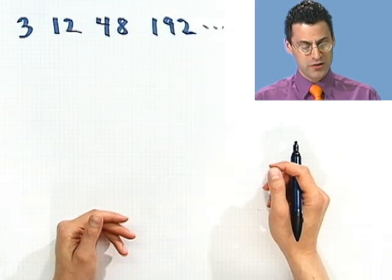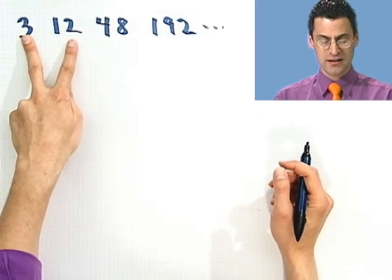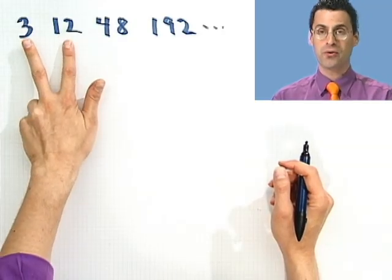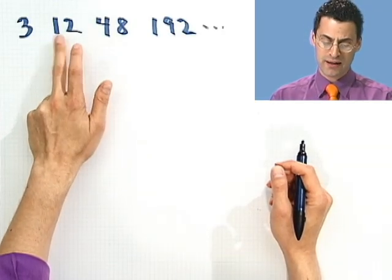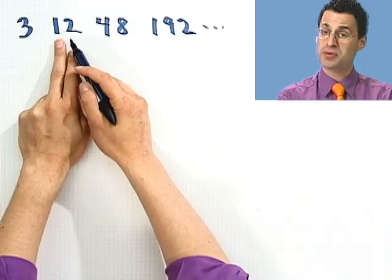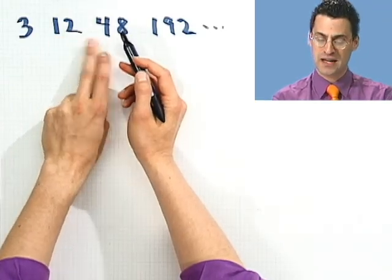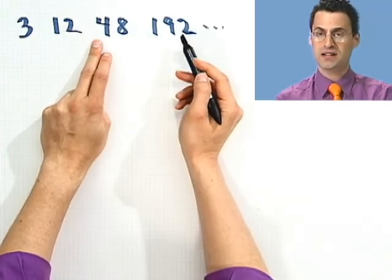Is there any pattern to this? Well you may notice that, in fact, to get from here to here, I multiplied 3 by 4. Now, how do I get from here to here? Well notice if I take this and multiply it by 4, I actually get the next term. And if I take this and multiply it by 4, I get the next term. So, in fact, this does have some sort of pattern. It has a multiplicative type structure, where to get the next term, instead of adding a constant number, I multiply by a constant number.